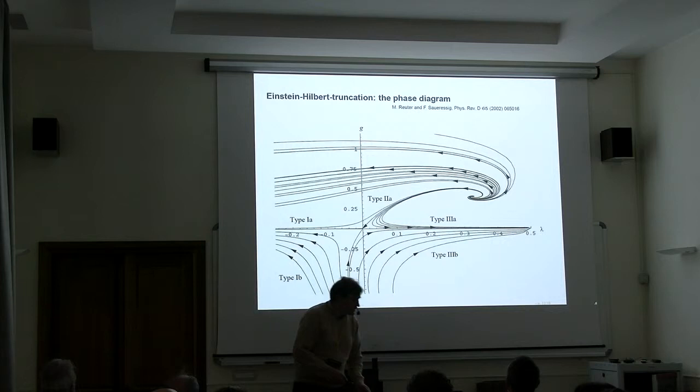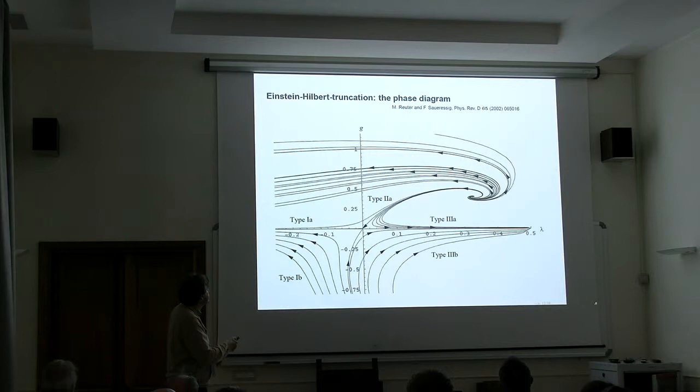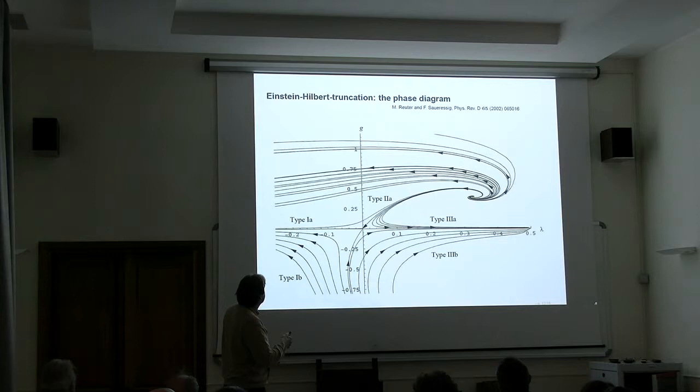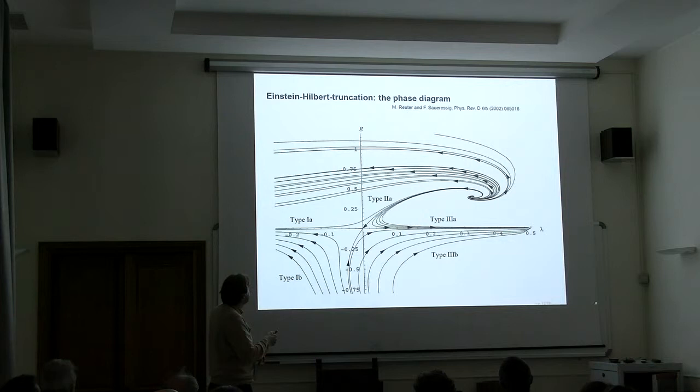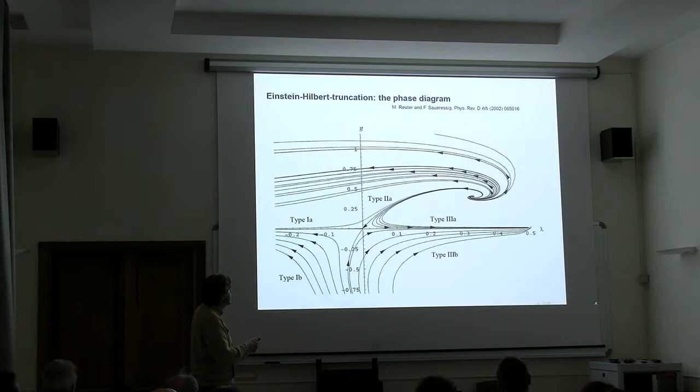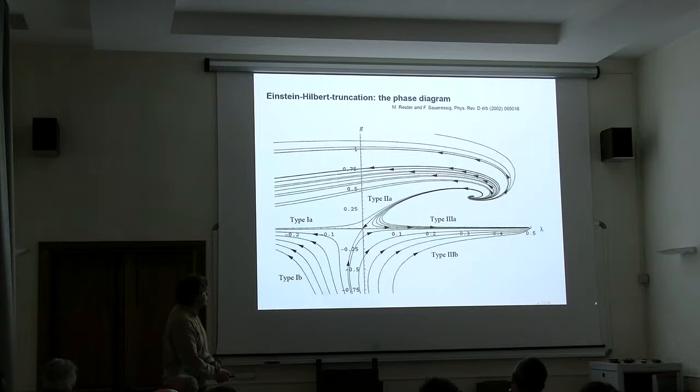You can integrate these equations. This was already done a long time ago. Here we have dimensionless Newton's coupling; here is the dimensionless cosmological constant. If you restrict to positive Newton's constant, you are up here. You see there is interplay between two fixed points: the Gaussian fixed point here, non-Gaussian fixed point here. All flows emanate from this non-Gaussian fixed point. They go to smaller energies, and the things that go down here to the Gaussian fixed point regime develop something like a classical GR regime. Here on this side, we have a positive cosmological constant; here is a negative cosmological constant; and here we get something that has zero cosmological constant.